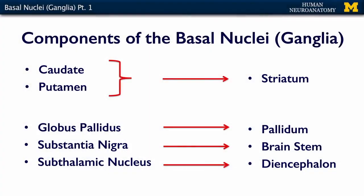These are the different components of the basal nuclei we'll be discussing. The caudate and putamen are both part of the brain called the striatum. The globus pallidus is part of the pallidum. The substantia nigra, or brown spot, is found within the brain stem, and the subthalamic nucleus is part of the diencephalon.